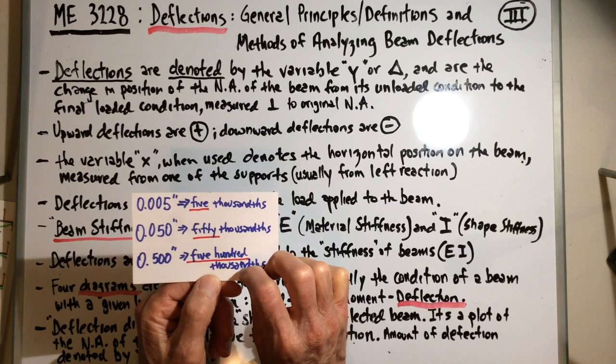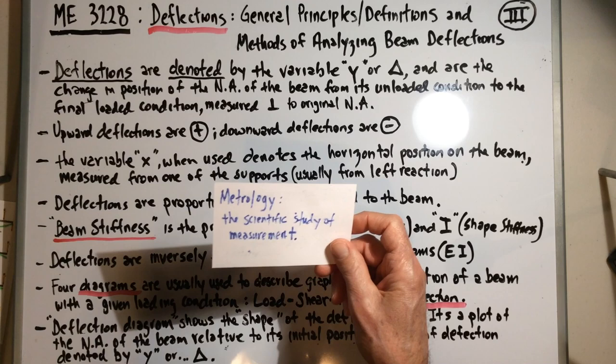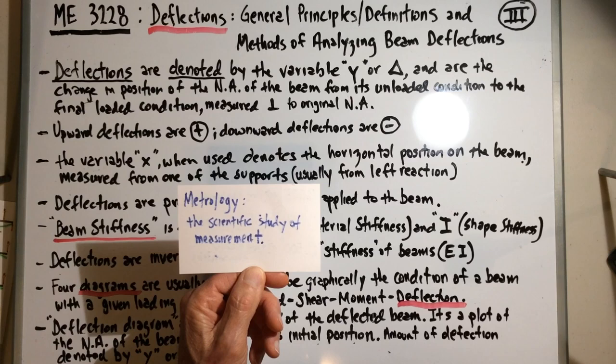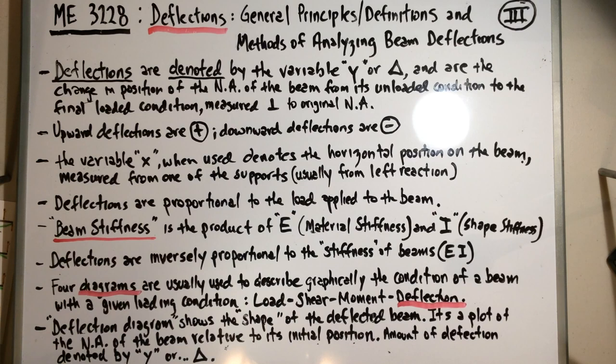The other thing I was talking about is metrology — the study of measuring things — because when we measure deflections they're usually very, very small, usually less than an inch. There are different instruments to measure that, but metrology is basically just the scientific study of measurement. It's a huge field of study. So now let's talk about some general definitions when we're discussing deflections.